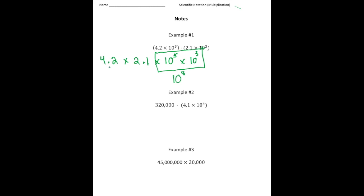When I do 4.2 times 2.1, that gives me 8.82. And then 8.82 times 10 to the eighth can be our answer. Or we could write it in standard form, which is going to be 882 million. The way I did that is I multiplied 8.82 times 10 to the eighth, which means I had to move the decimal eight spots to the right, resulting in 882 million.